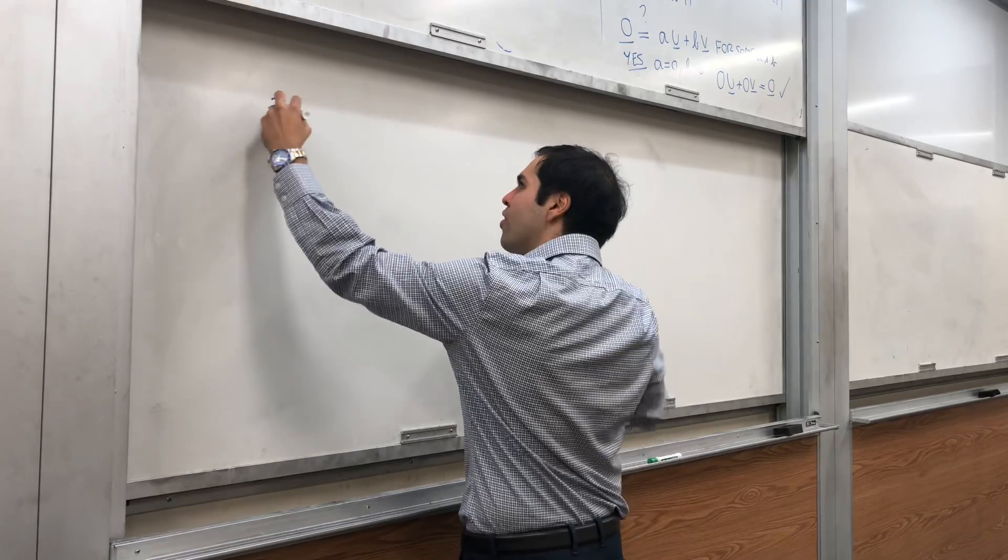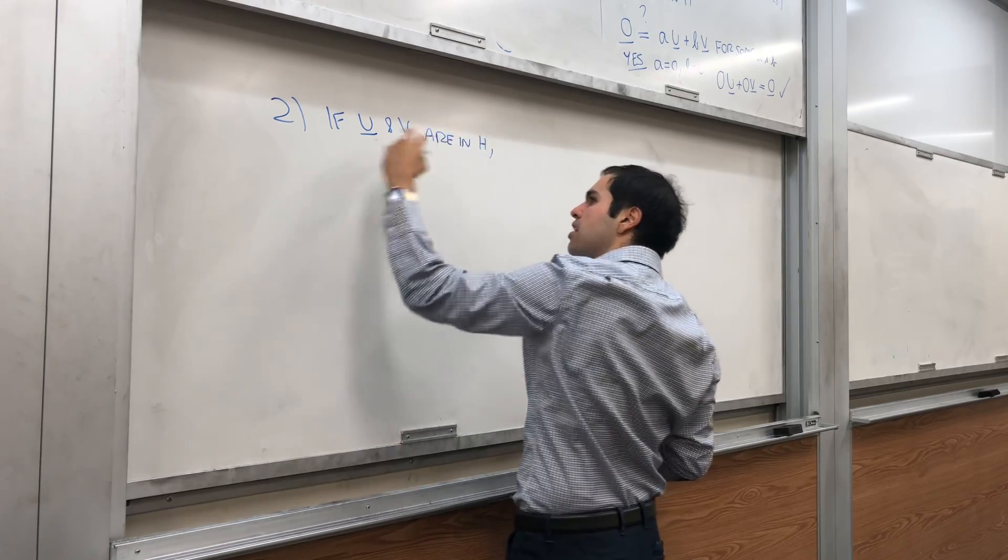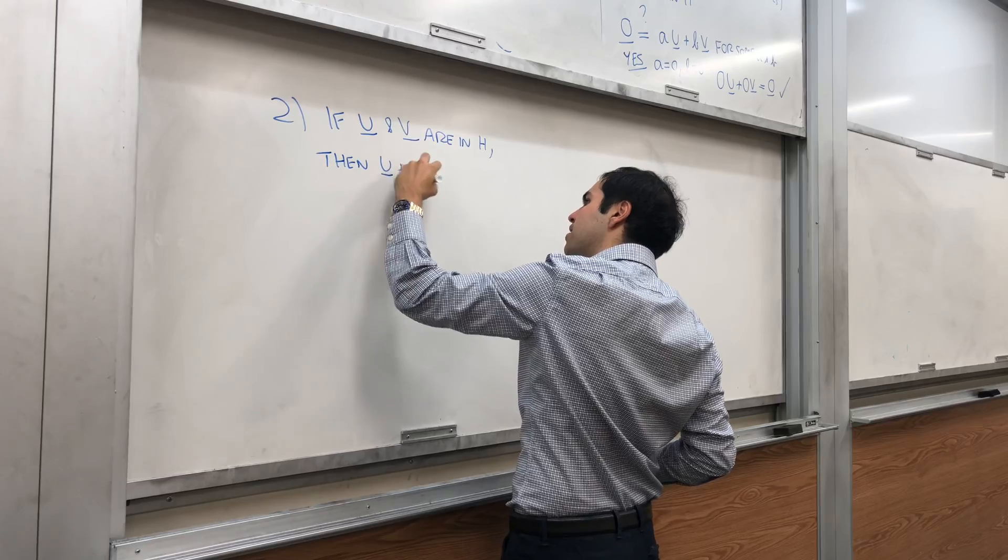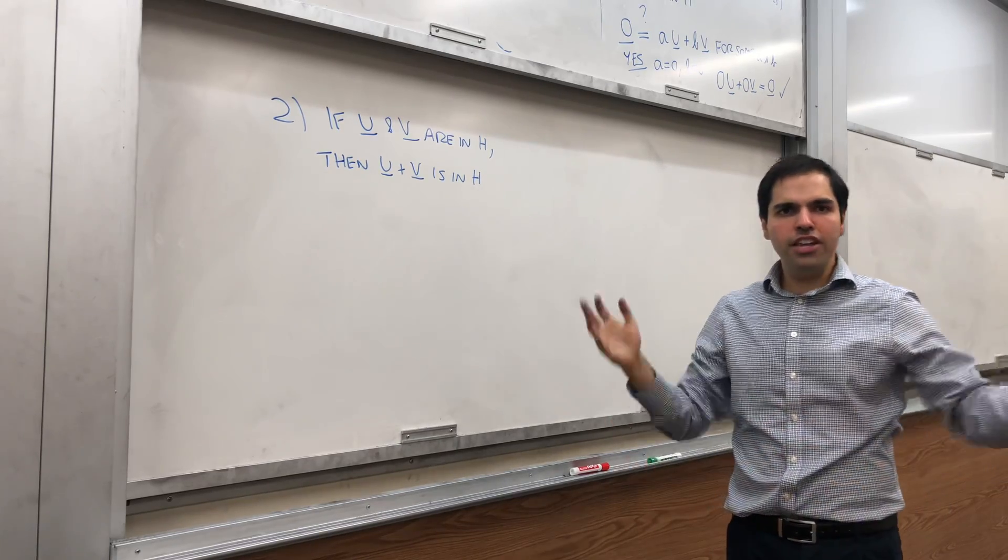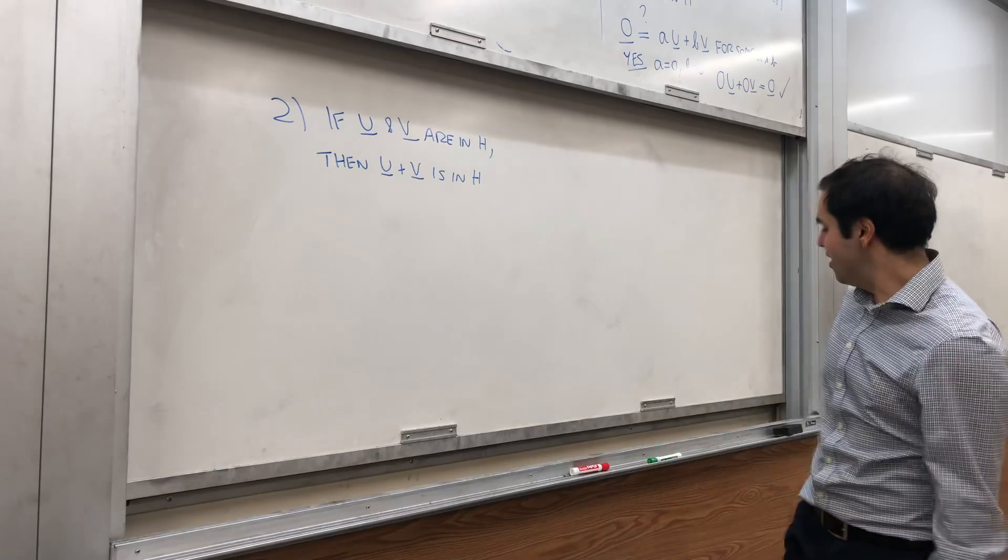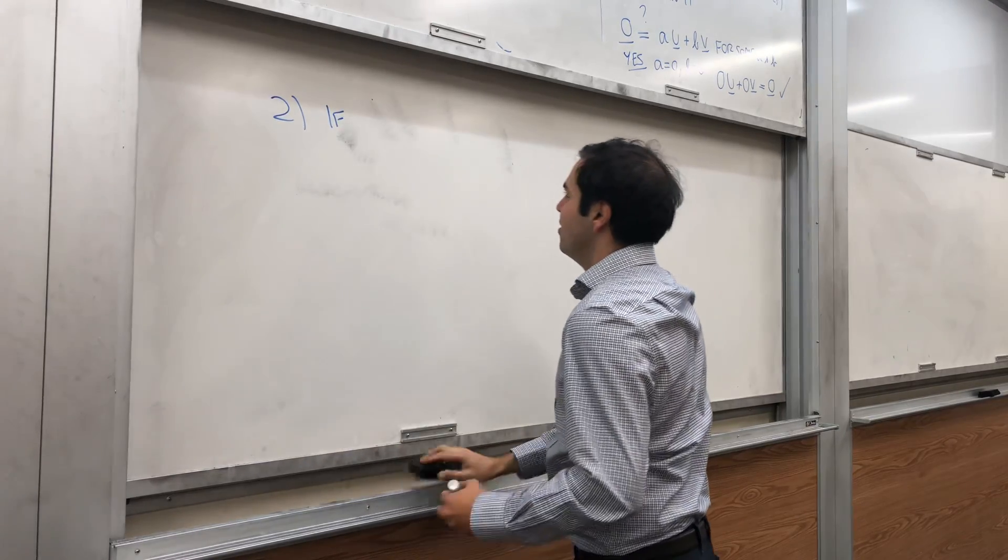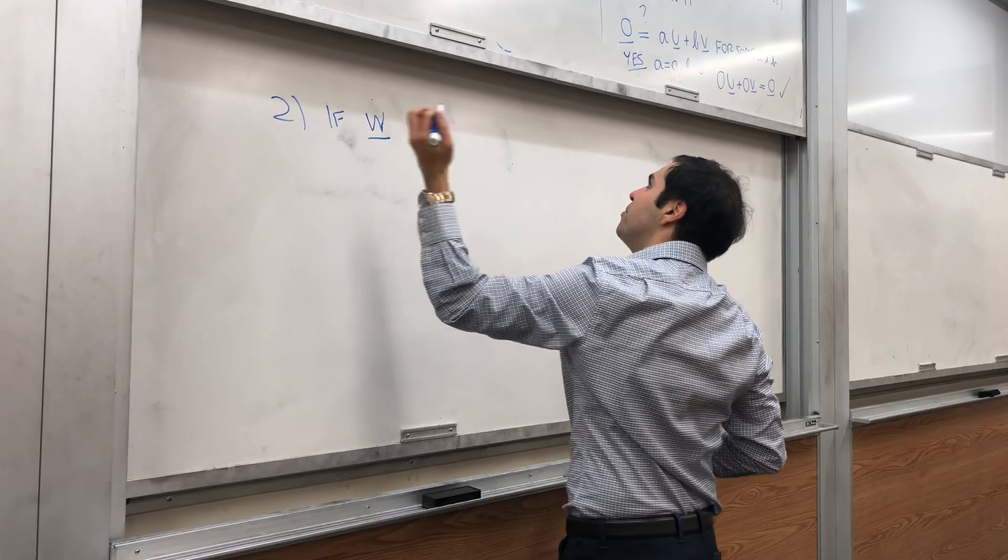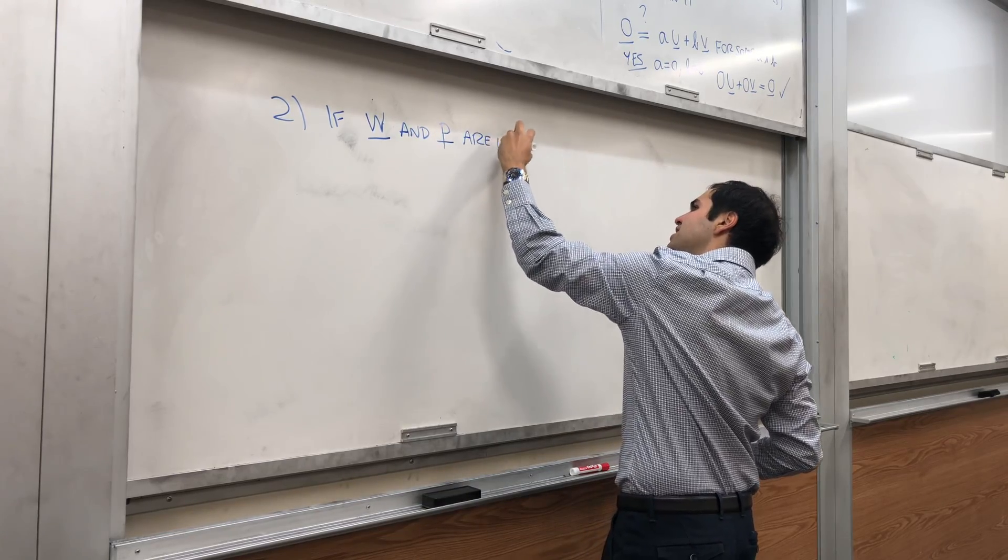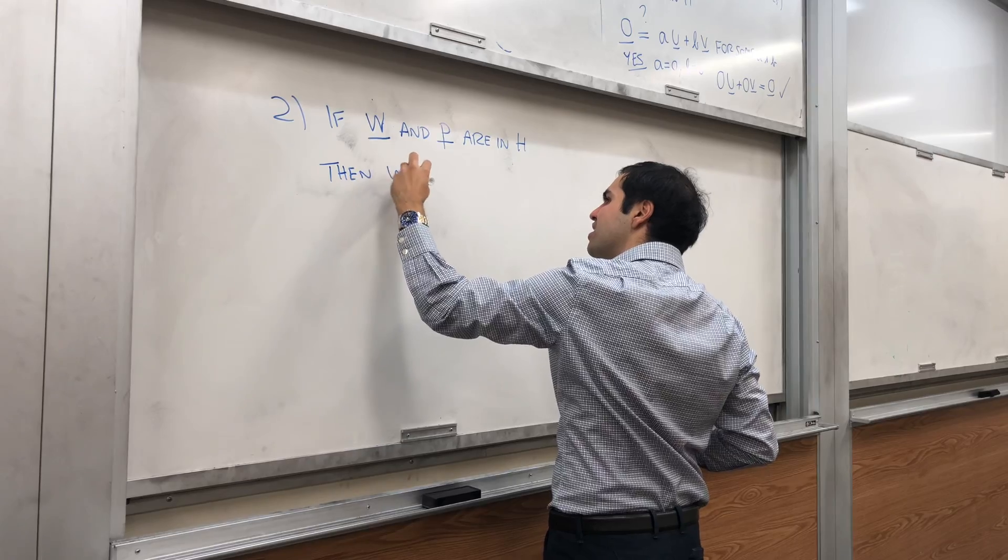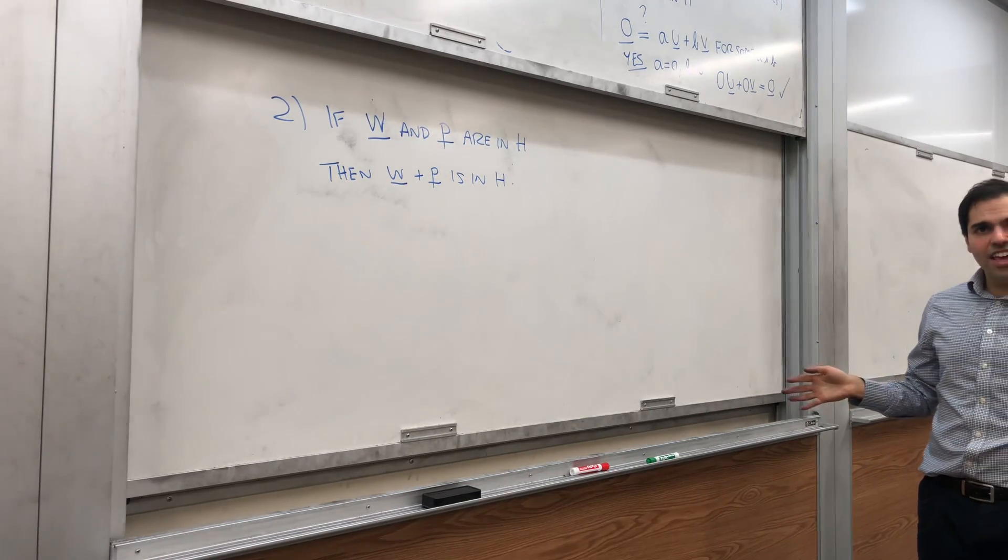Second of all, we need to show if u and v are in h, then u plus v is in h. And all this is saying is, if you have a linear combination of u and v, and another one, let's call it w and p. So if W and P are in H, then their sum is in H.